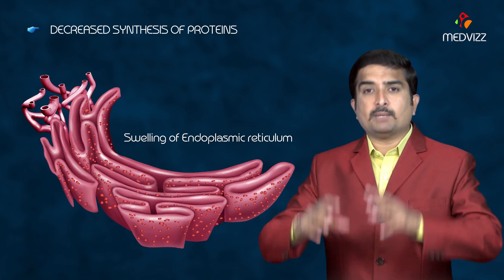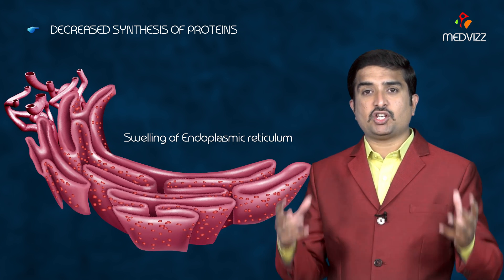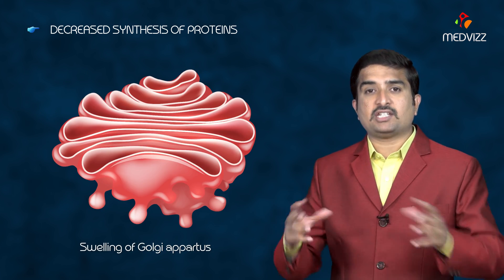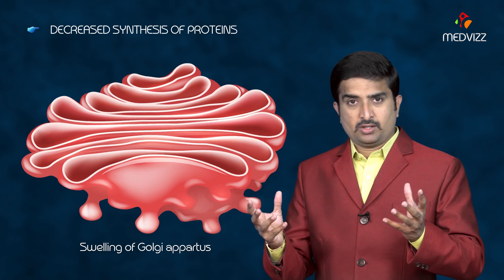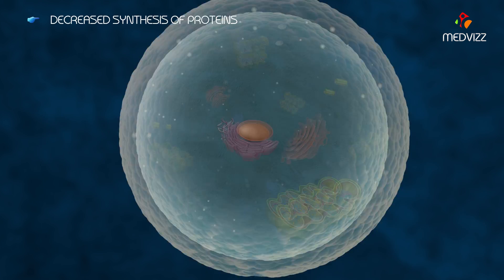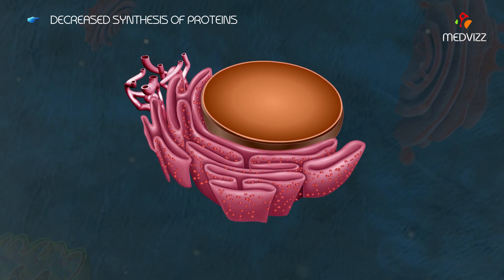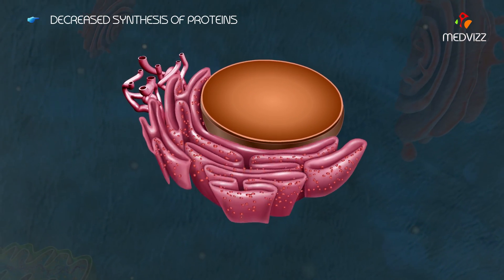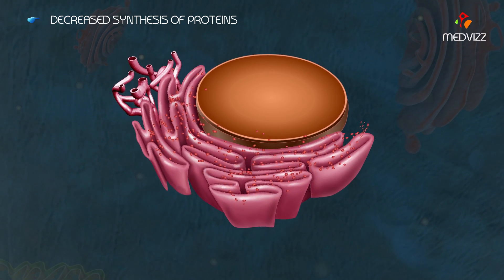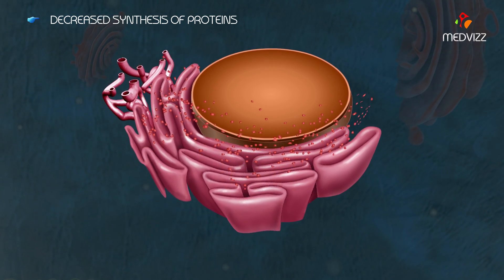The next important event is decreased synthesis of proteins, seen mainly due to continued hypoxia. The membranes of the endoplasmic reticulum and Golgi apparatus swell up, causing ribosomes to detach from the rough endoplasmic reticulum and polysomes to be converted to monosomes, which disperse into the cytoplasm.